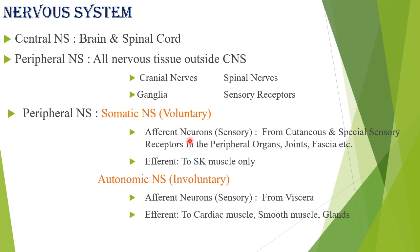The peripheral nervous system comprises the somatic nervous system — also called voluntary — and the autonomic nervous system — also called involuntary. Both somatic and autonomic nervous systems have afferent divisions of neurons as well as efferent divisions. The afferent carries senses from the peripheral part of the body to the brain; the efferent carries impulses from the brain to the peripheral part.